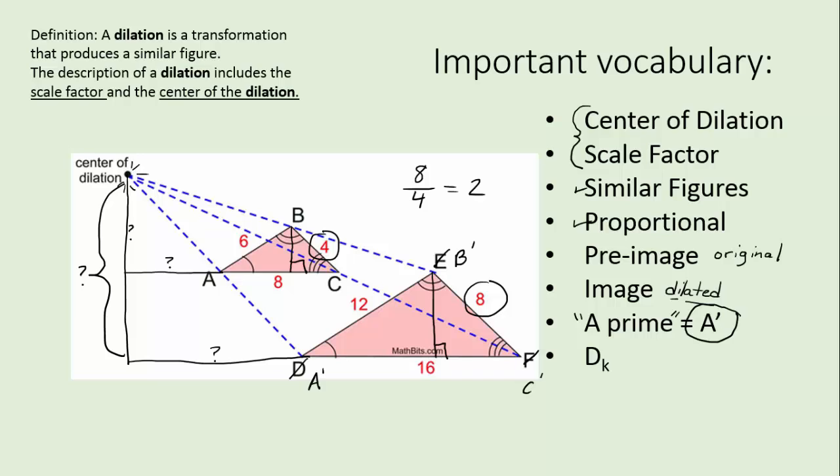And finally this terminology means that it's a dilation. The D stands for dilation and the K is the scale factor. So normally it's a number. Let's try a couple examples.